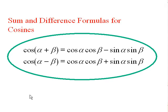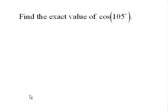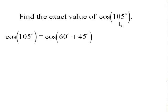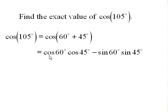Let's use this to calculate an exact value for a trig function of an angle that might not otherwise be accessible. How about the cosine of 105 degrees? 105 degrees is useful here because 105 can be written as a sum of angles whose values you know exactly — often there's more than one way to set up such a problem. So, 105 degrees equals 60 degrees plus 45 degrees. Cosine of 105 is the cosine of that sum. The formula gives: cosine of the first times cosine of the second, minus sine of the first times sine of the second.